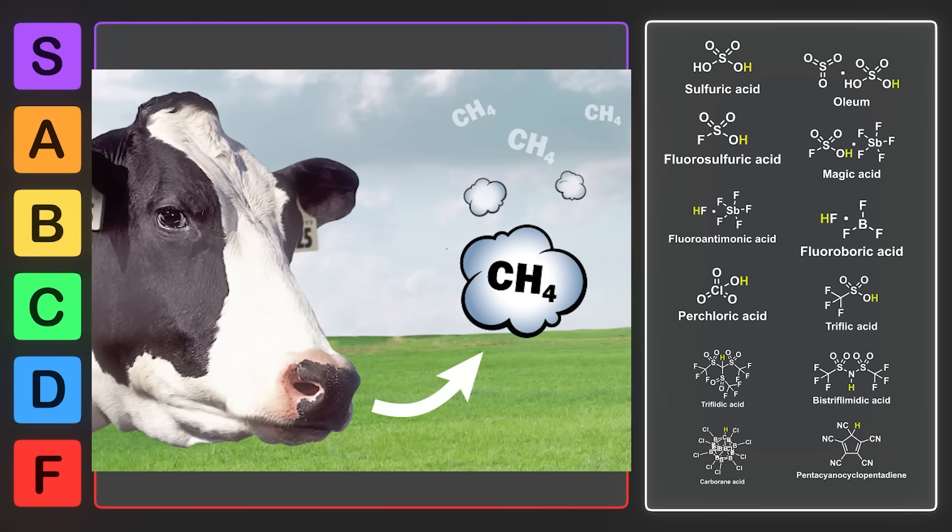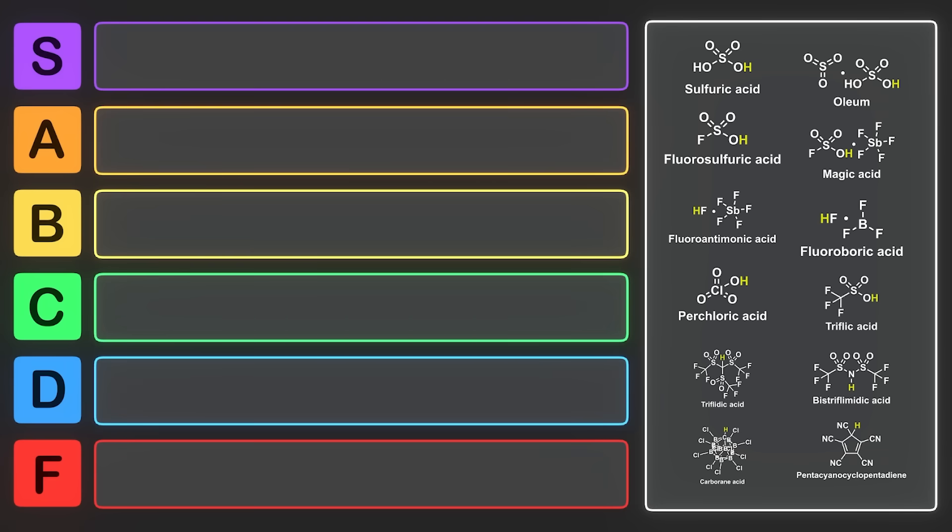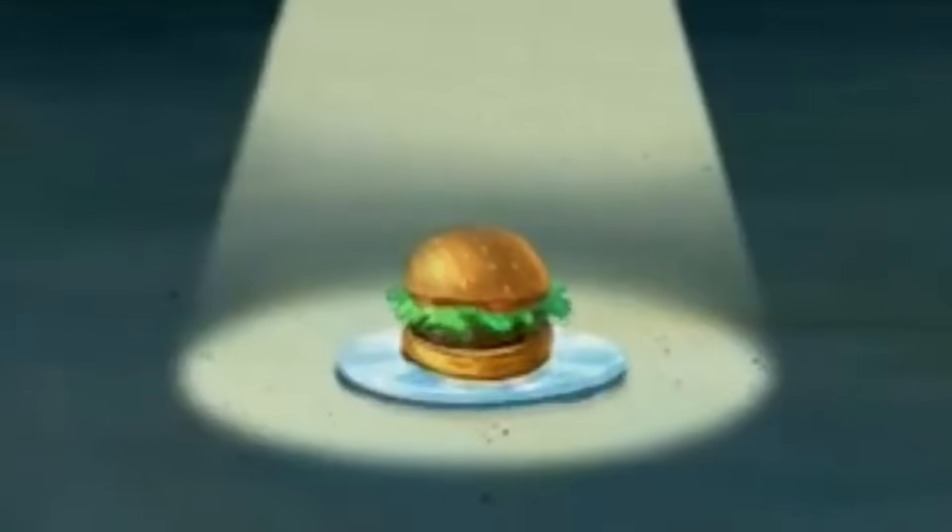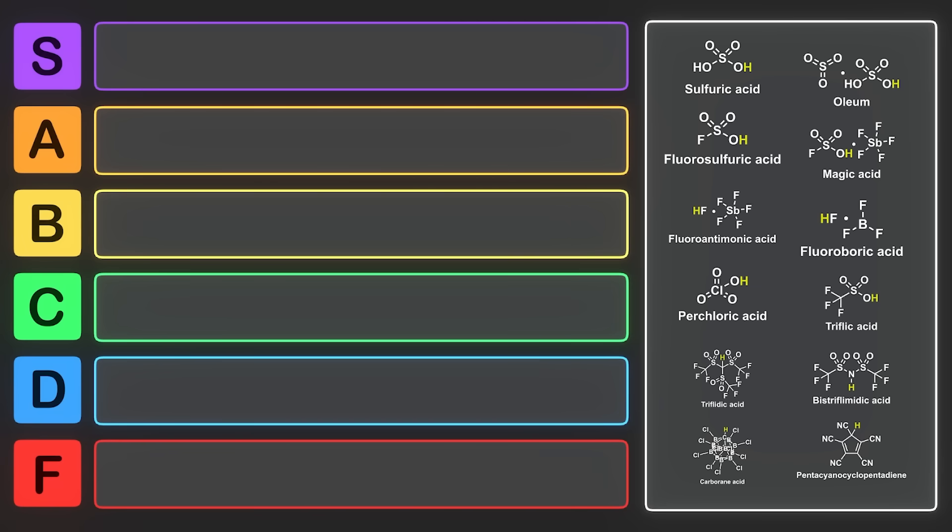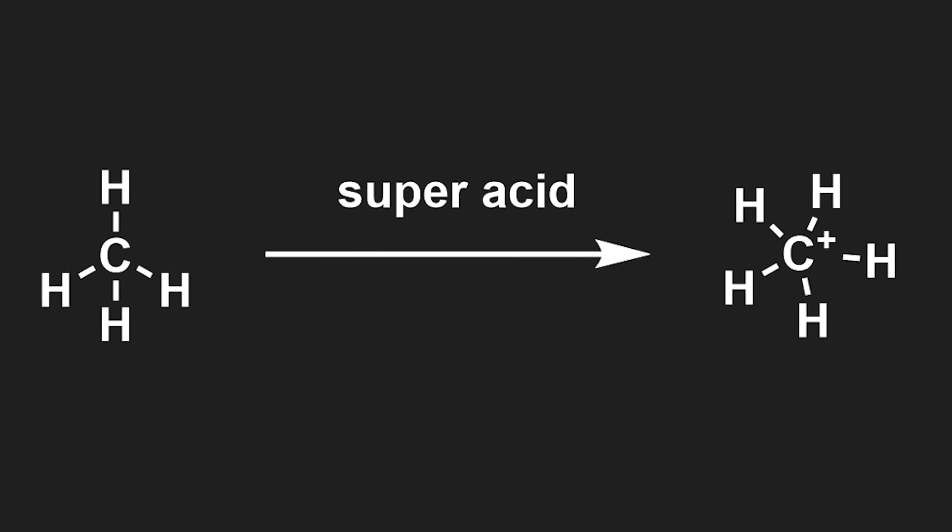You've heard of methane before, CH4. Carbons can only have four bonds, right? Wrong! Some of these acids are so strong that they can even protonate methane to CH5+.